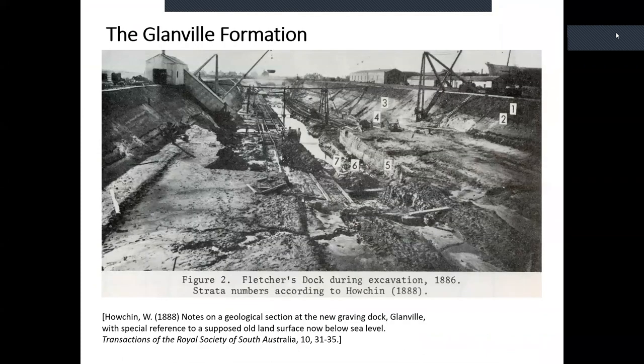One of the first descriptions of what we now call the Glanville Formation — last interglacial coastal marine sediments in South Australia — comes from this era. State geological surveys have a remit to publish up to the state boundary, so discrepancies in map sheets sometimes appear. What we now call the Glanville Formation was first described by Walter Howchin in a Glandular Graving Dock — now underwater — with the last interglacial succession at point number seven, buried by almost 10 meters of younger sediment, a couple of meters of recent fill at the time of publishing in 1888.